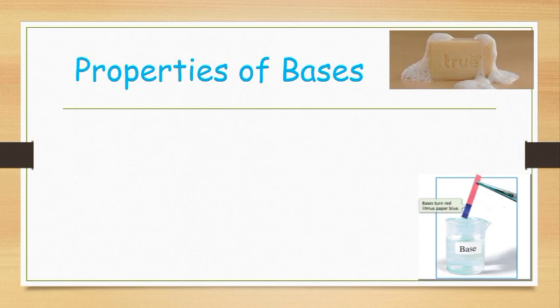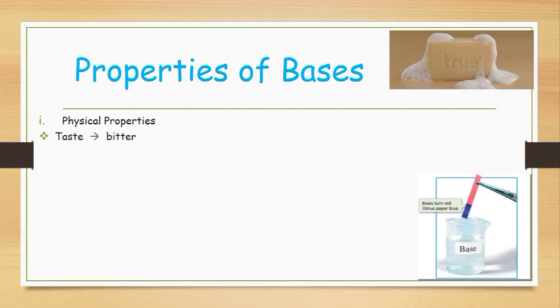The properties of bases. The first is the physical property of bases. Generally, bases taste bitter when they dissolve in water. Regarding electrical conductivity, molten bases dissociate into ions and conduct electricity. Therefore, bases are electrolyte substances — substances that can conduct electricity.